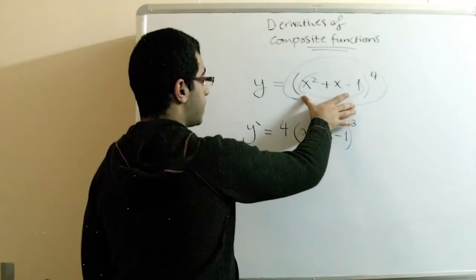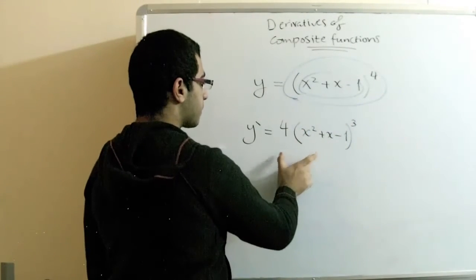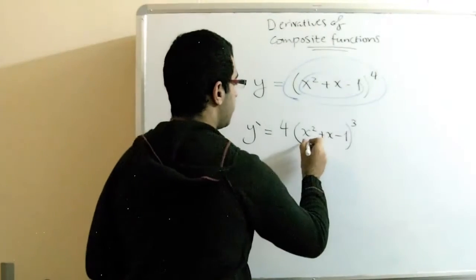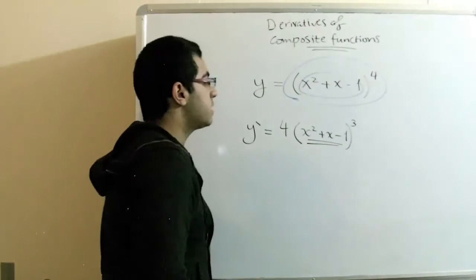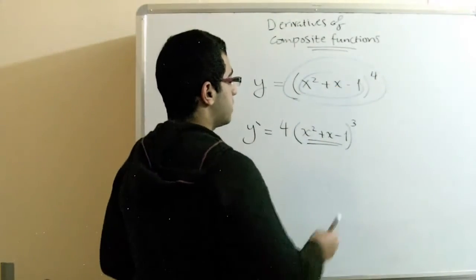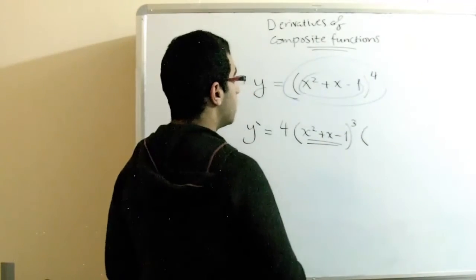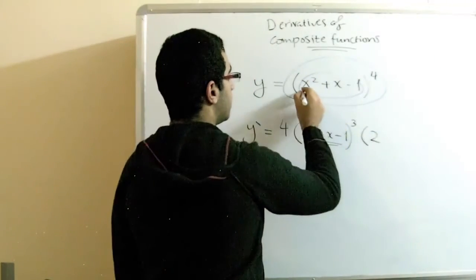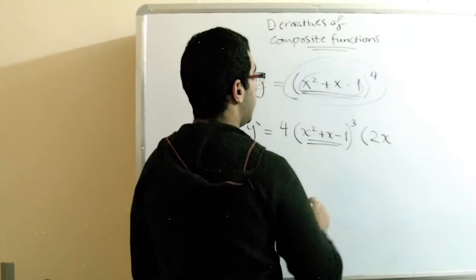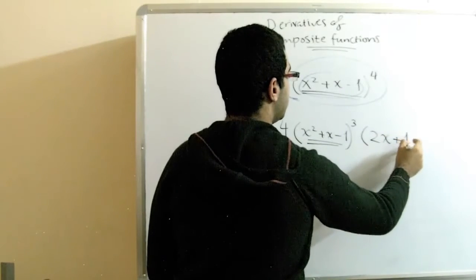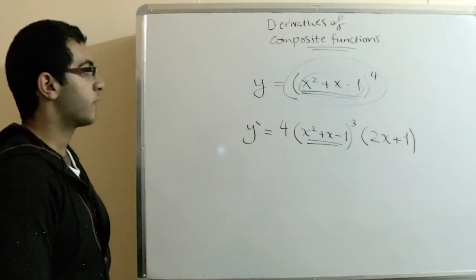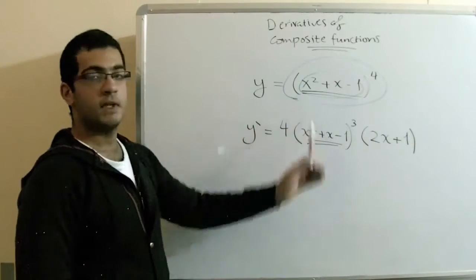Dealing with the whole expression as a single term means we don't change anything in this expression. The second part is dealing with the expression inside the brackets and getting its derivative. So we drop the 2 to get 2x, plus 1, and the constant gives zero. And that's it — we have the derivative of this function.